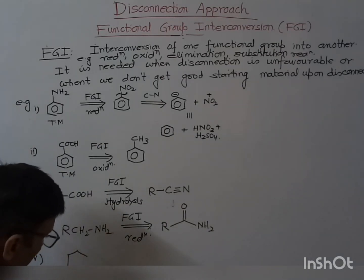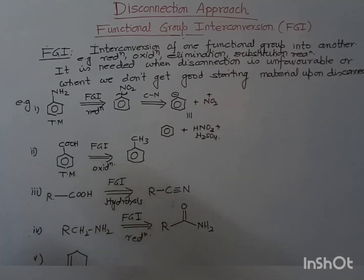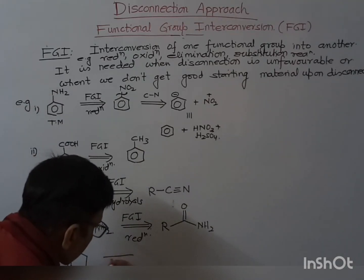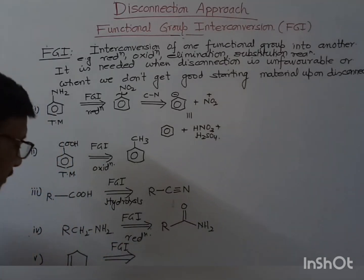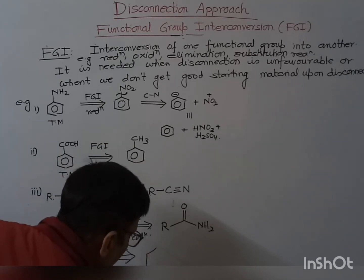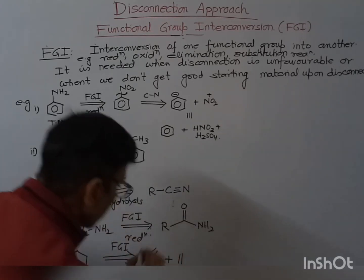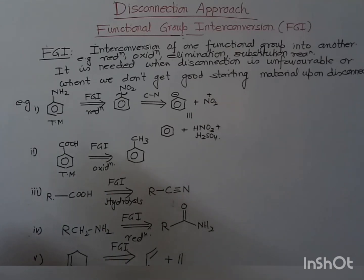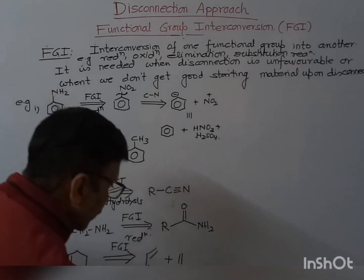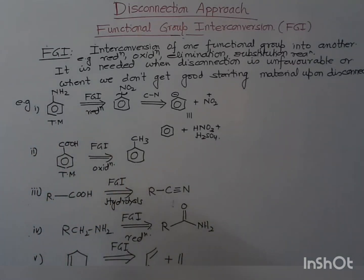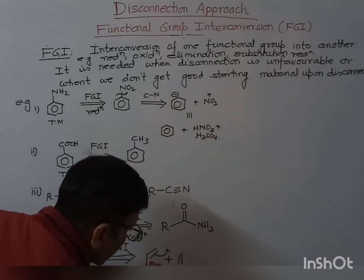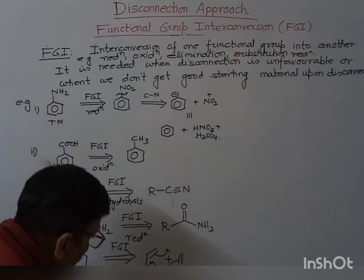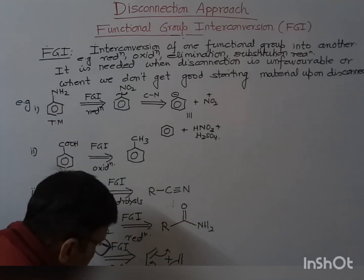Suppose if you have cyclohexene. For this cyclohexene, if you do the FGI, on the right side you can write butadiene plus ethylene. This is the example of the Diels-Alder reaction, where butadiene and ethylene undergo cyclization and you get cyclohexene. Below this arrow you write 'Diels-Alder reaction.'